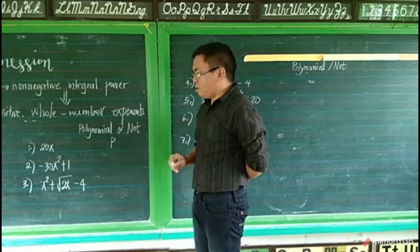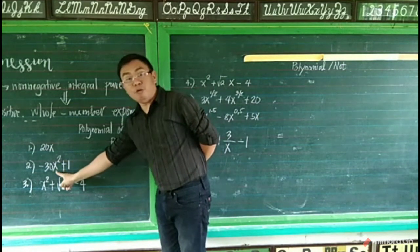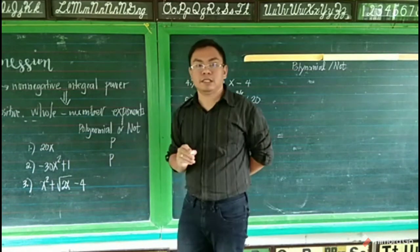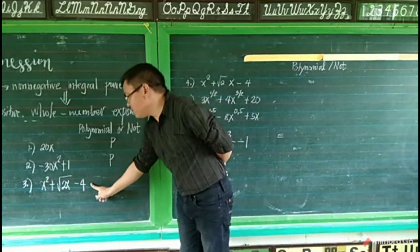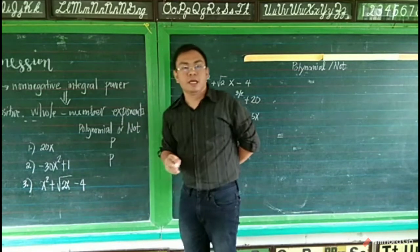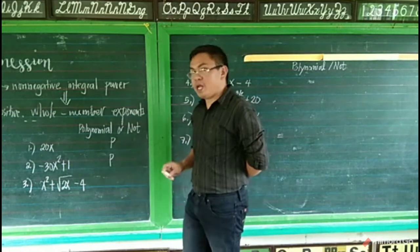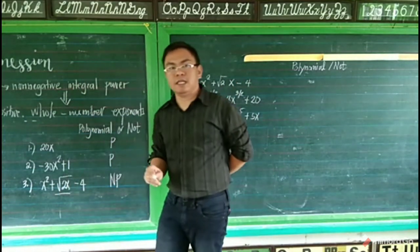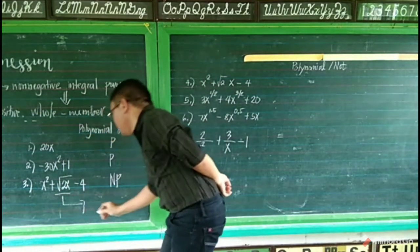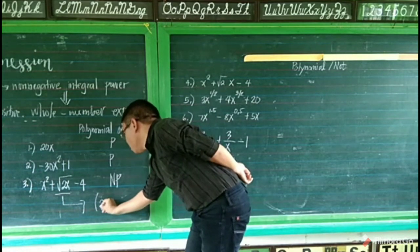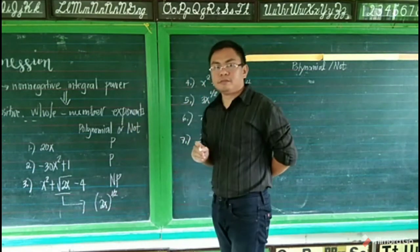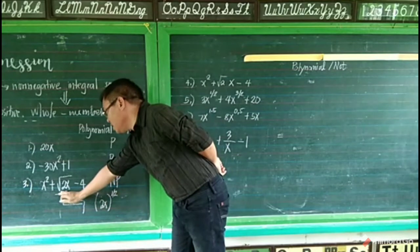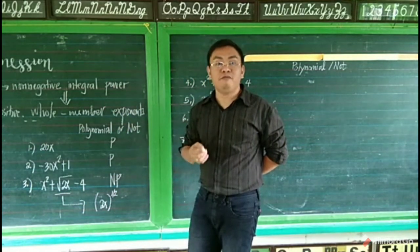For number two, we have negative 30x squared plus one. The exponent of X is two — two is positive, so number two is also a polynomial. For number three, we have x squared plus the square root of 2X minus 4. The answer is not polynomial. The middle term makes it not polynomial because the square root of 2X can be expressed as 2X to the exponent of one-half, which is a fractional exponent.